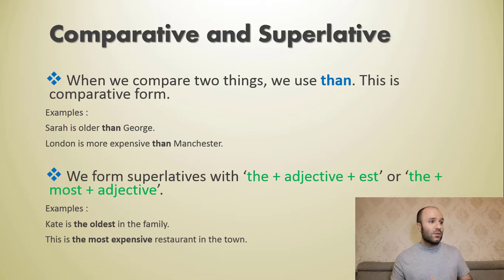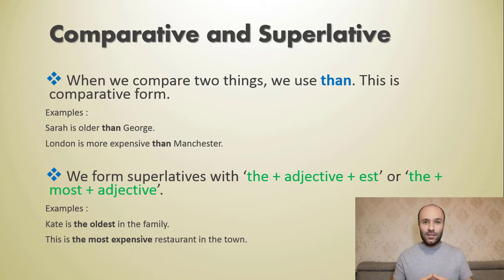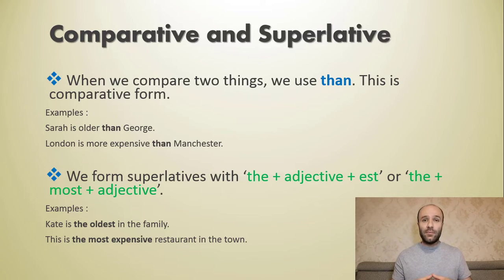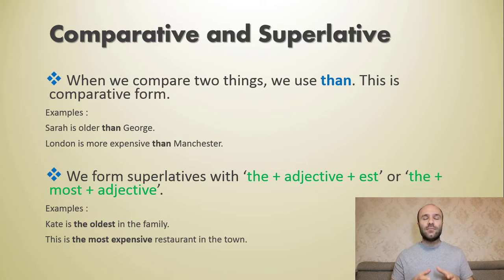We form superlatives with 'the' plus adjective plus '-est' at the end, or 'the' plus 'most' plus adjective. Examples: Katie's the oldest in the family. This is the most expensive restaurant in town. There are examples here for you to understand better.